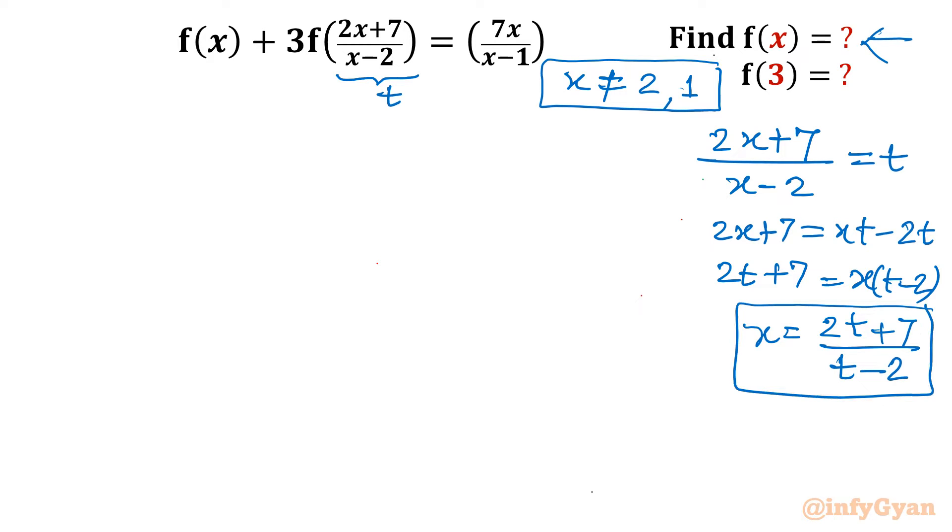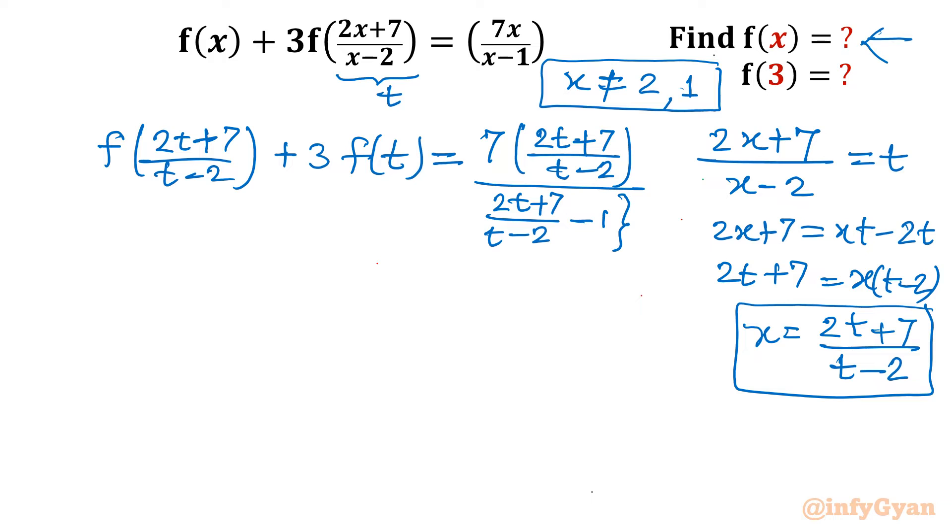If you will see, the original equation t was (2x+7)/(x-2). And see the function of t, means if I am calculating x as a function of t, then x = (2t+7)/(t-2). Something very similar equation, only the variable changed. See how it will be.